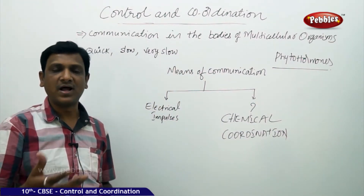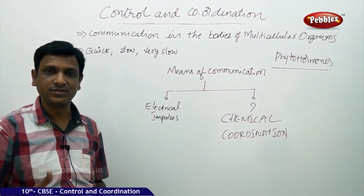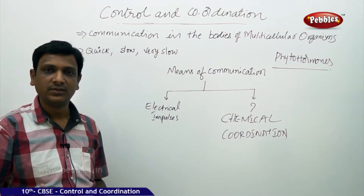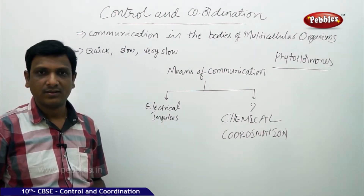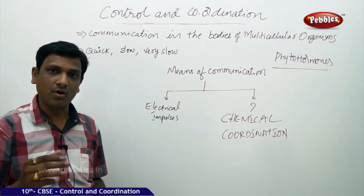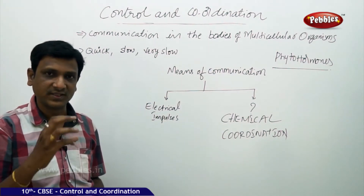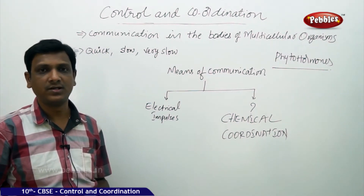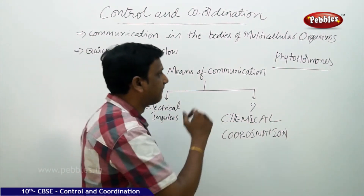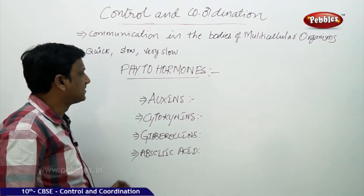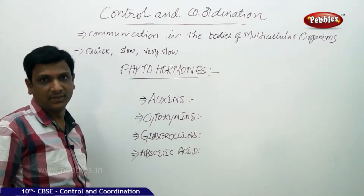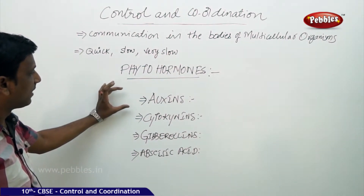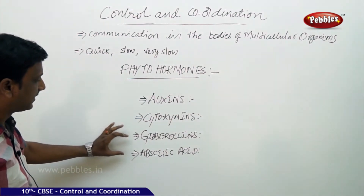Plants are able to produce responses to light, gravity, and water — as discussed in the previous class. Plants show responses to all such stimuli because of certain chemical compounds, or chemical messengers, in the plant body — these are the phytohormones. The major phytohormones are auxin, cytokinins, gibberellins, and abscisic acid.